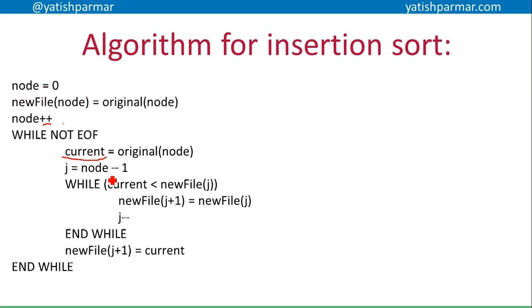While my current is smaller than my new file j, I basically need to move my items along in the new list. So that's why my new file j plus one is going to be equal to new file j.